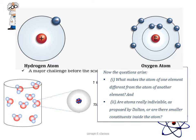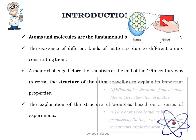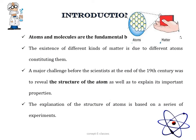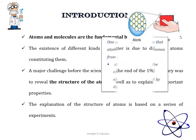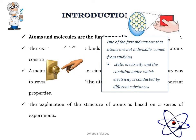A major challenge before the scientists at the end of the 19th century was to reveal the structure of the atom as well as to explain its properties. All these explanations are based on a series of experiments. One of the first indications that atoms can be divided came from studying static electricity. You might have experienced that when we touch a knob we might feel a little shock. That is mainly due to the transfer of electric charges, meaning there are some charged particles inside every matter.